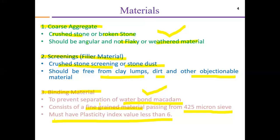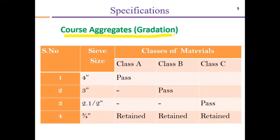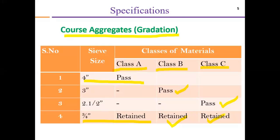Regarding the specifications of coarse aggregate, first the gradation: we can use three types of material — Class A, Class B, and Class C. Class A material passes through a 4-inch sieve and is retained on a 3/4-inch sieve. Class B material passes through a 3-inch sieve and is retained on a 3/4-inch sieve. Class C material passes through a 2.5-inch sieve and is retained on a 3/4-inch sieve.